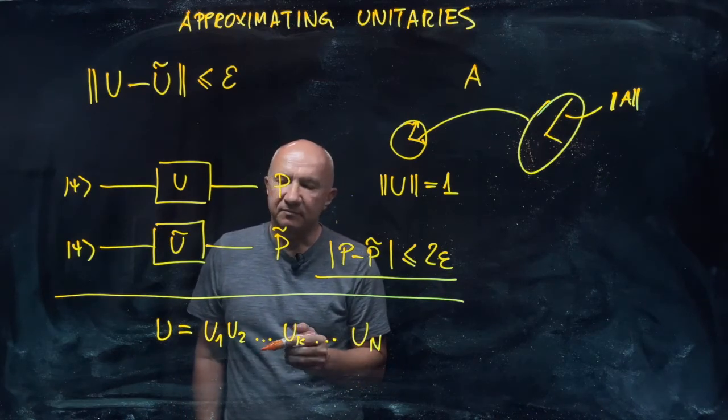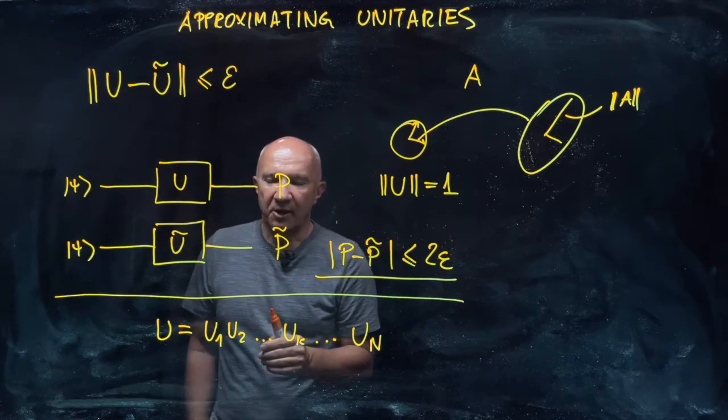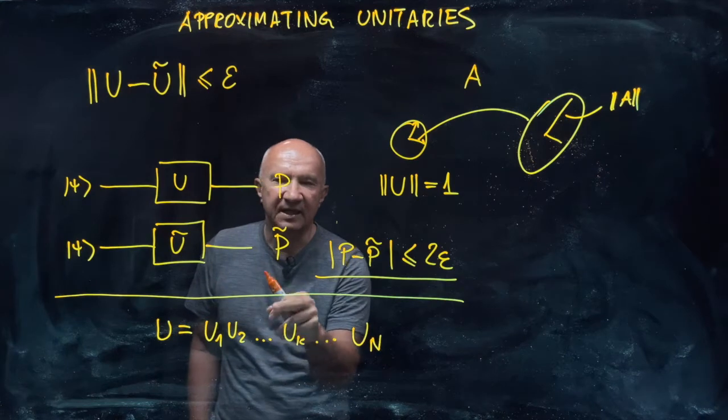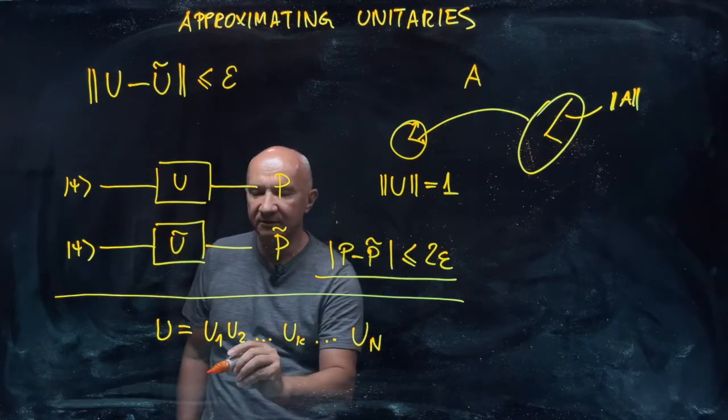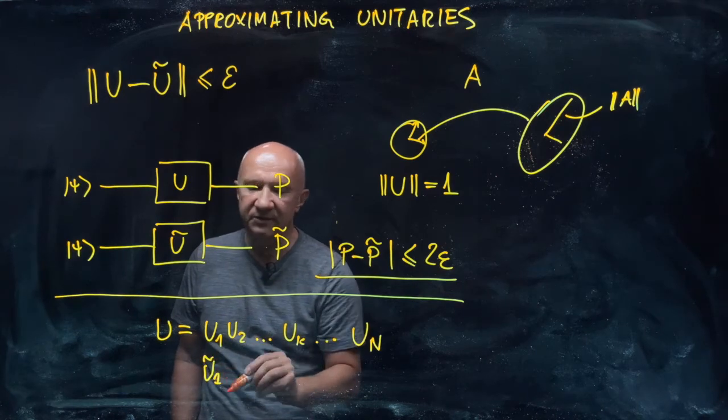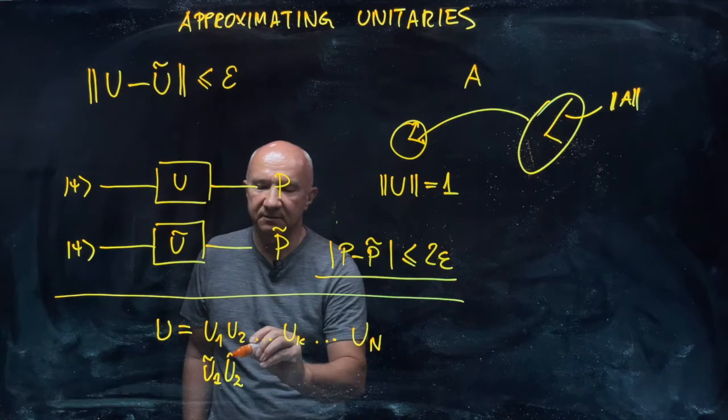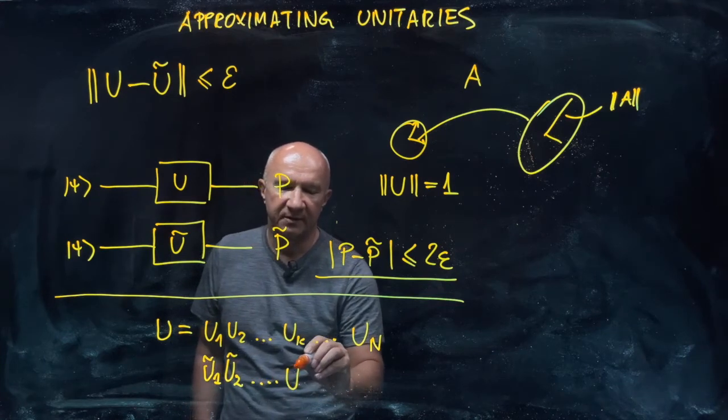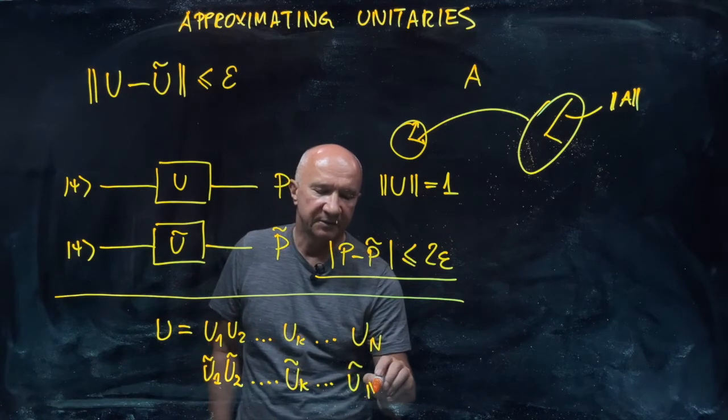And then you realize the sequence by approximating every single element in the sequence. So you don't have u1, but you can construct u tilde 1. So you can also construct u tilde 2 and so on and so forth. So you have u tilde k and u tilde capital N.